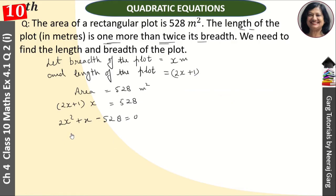Now, we are going to find factors by multiplying 2 into 528. We will make some factors in which the difference equals the coefficient of x. So, we're going to make the factors of 528.